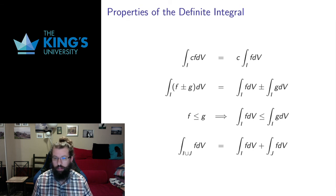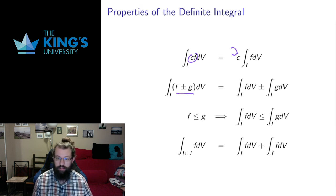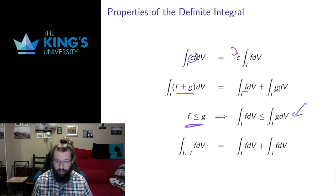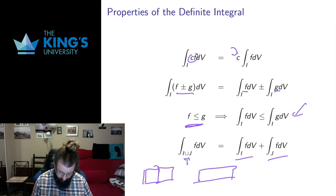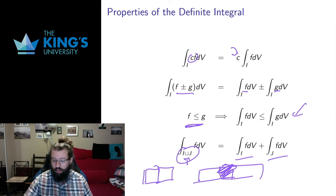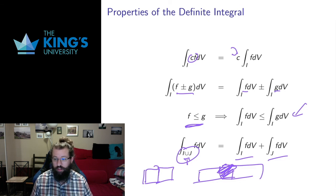Lastly, the definite integral has a bunch of familiar properties. It is linear: I can pull a constant out, and I can split up a sum of two piecewise continuous functions. If a function has an inequality, the integral has the same inequality. If I have two intervals that match up but don't overlap in any region that has area, then the integral over the union is the sum of the two integrals — but I must avoid overlap, since overlapping intervals would count a region twice. Those are the formal properties of the integral. In the next video we'll move on to calculation.